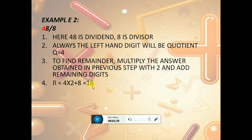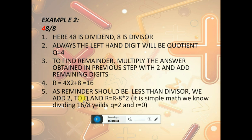As 16 is greater than 8, it's simple math. We know that 16 by 8 gives quotient 2 and remainder 0. This quotient should be added to q, so the answer will be q equals 6 and r equals 0.